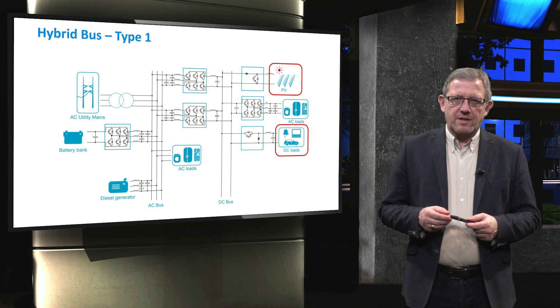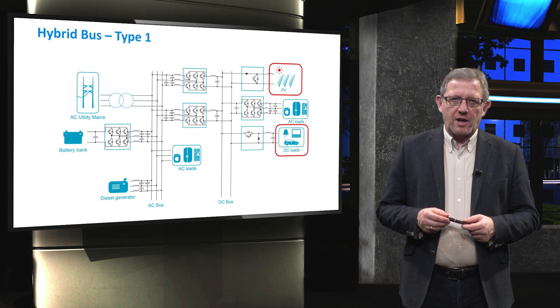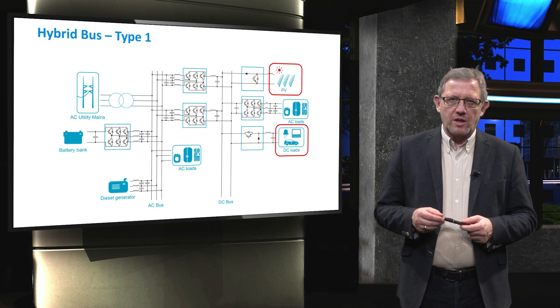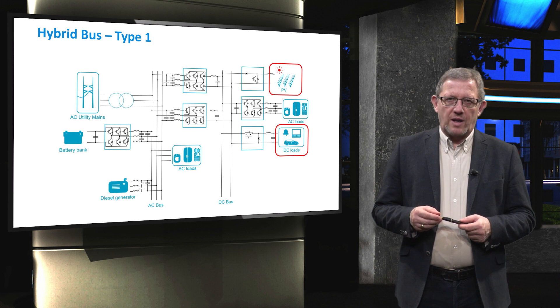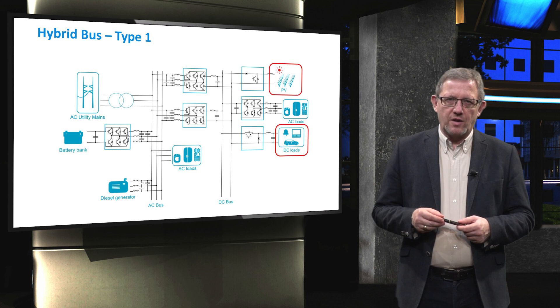IGBT-based three-leg switches are used to connect AC loads to the DC link. At the AC bus, the diesel engine is directly connected to the bus while the battery bank is connected through a three-phase three-leg DC to AC inverter.